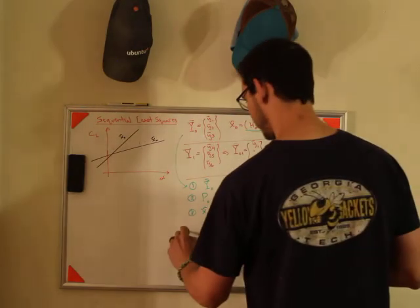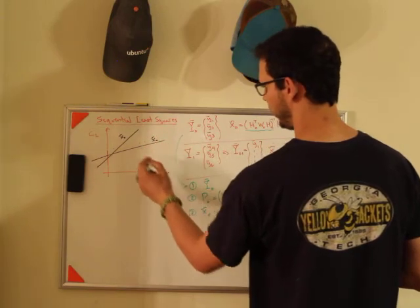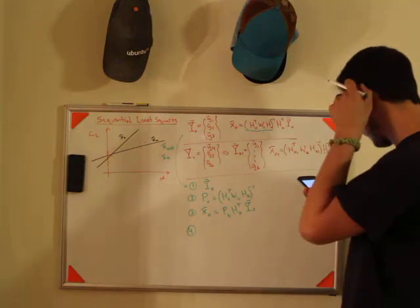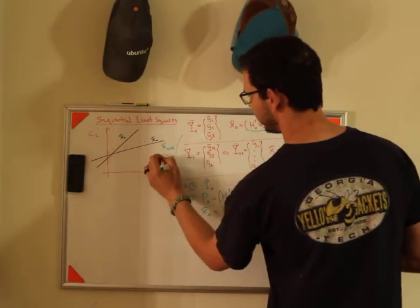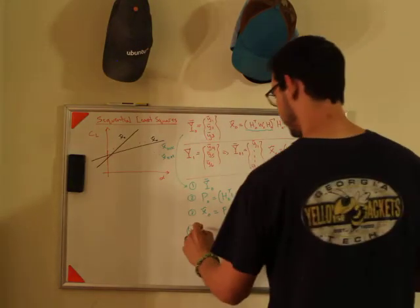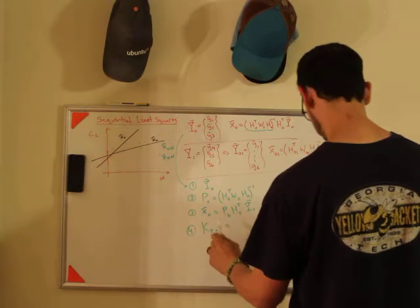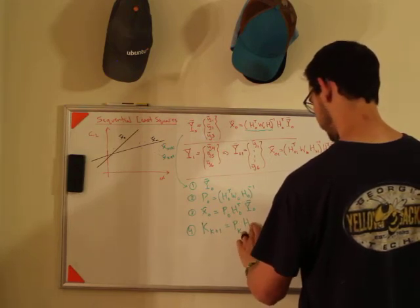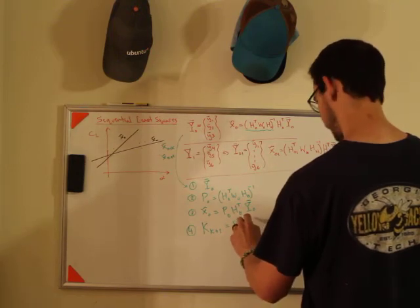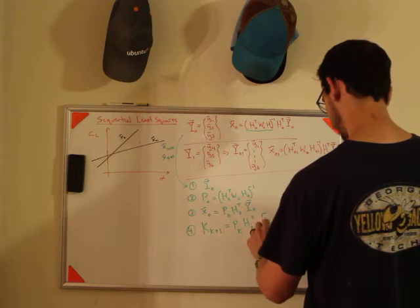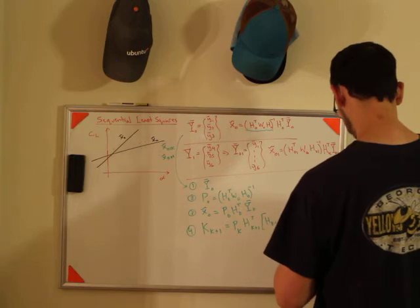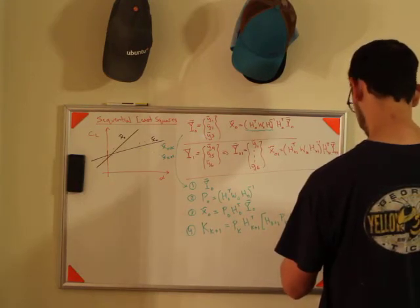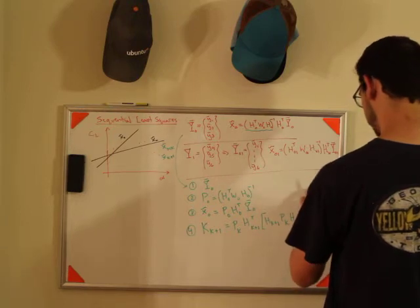Then every time you get a measurement, I'm going to call this x tilde k plus one. Every time you get a new set of measurements, you use this update law. So what you do is K of k plus 1, so it's capital K, k is pk, h k plus 1, transpose, h k plus 1, pk, h k plus 1, plus w k inverse, inverse, inverse.